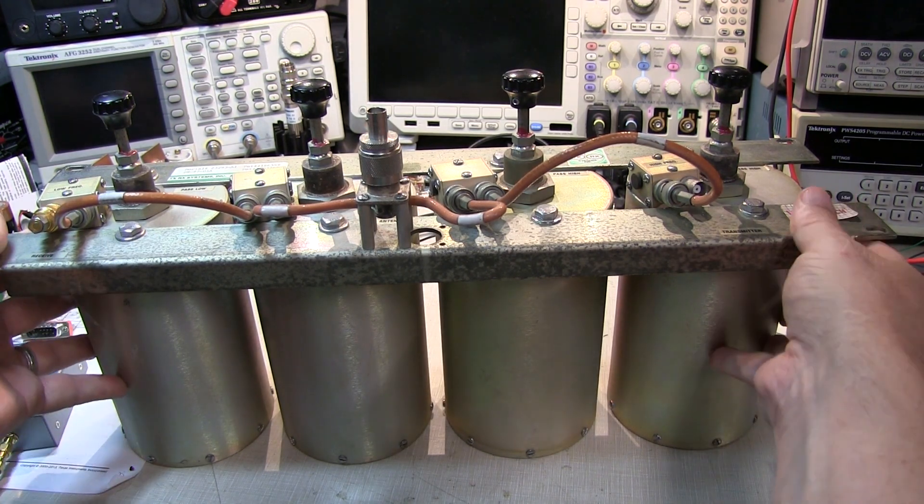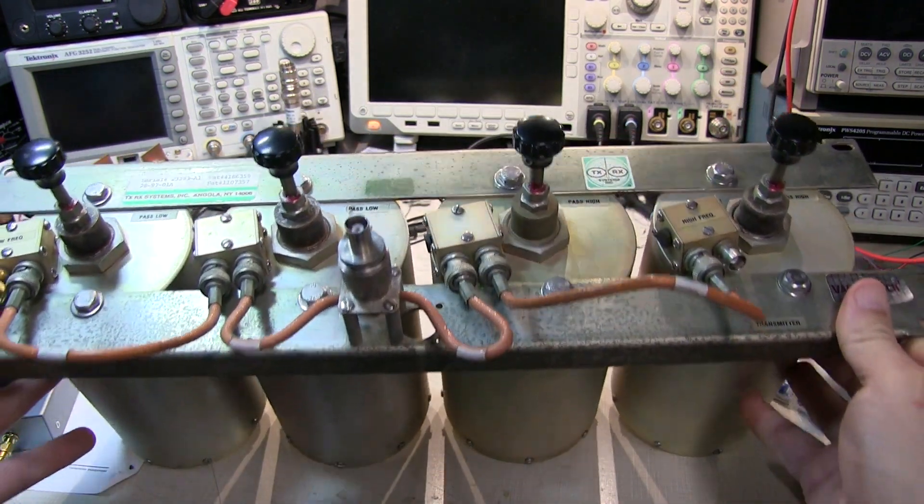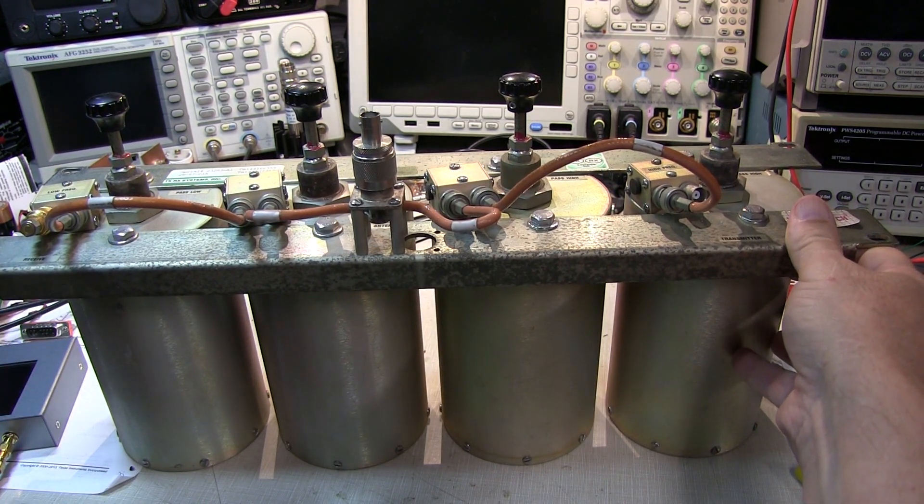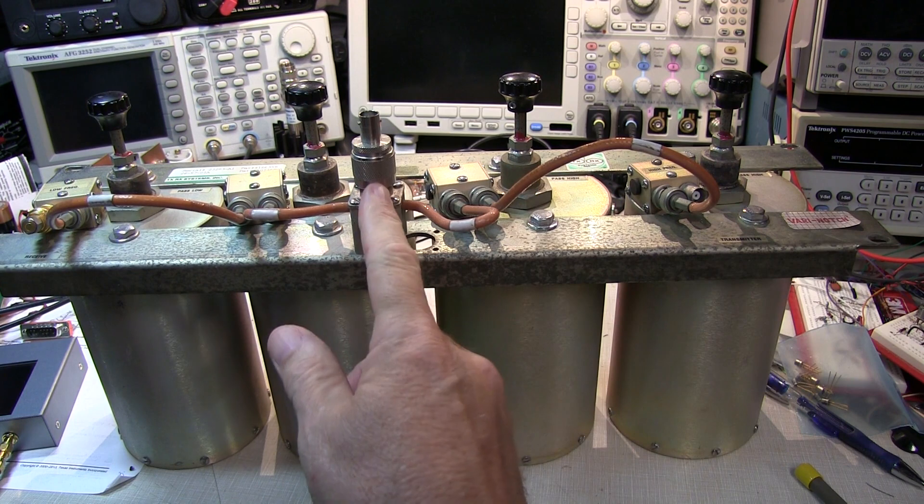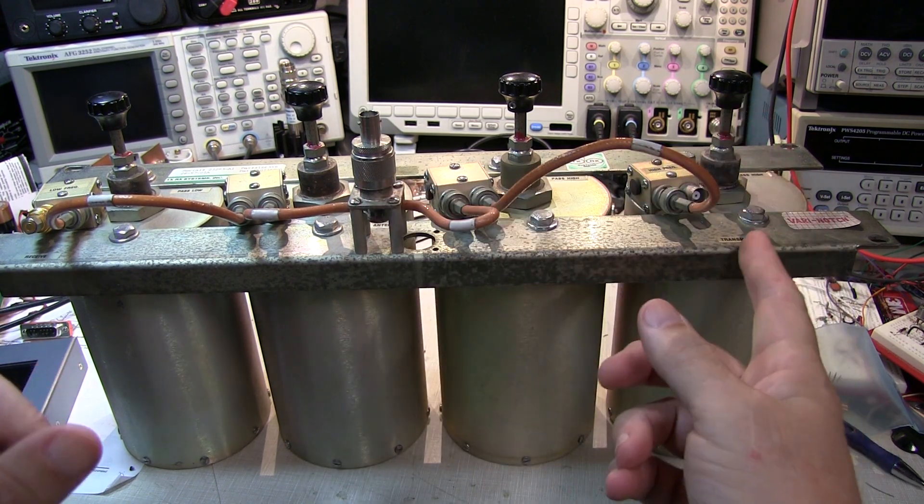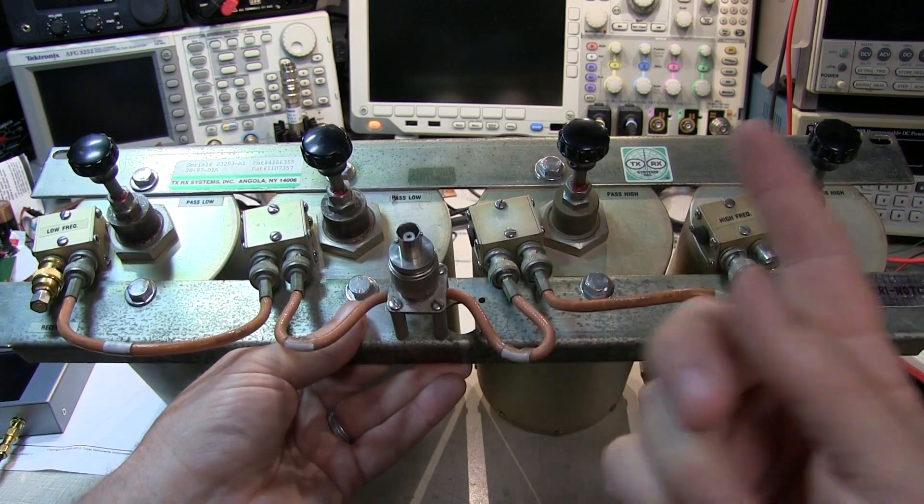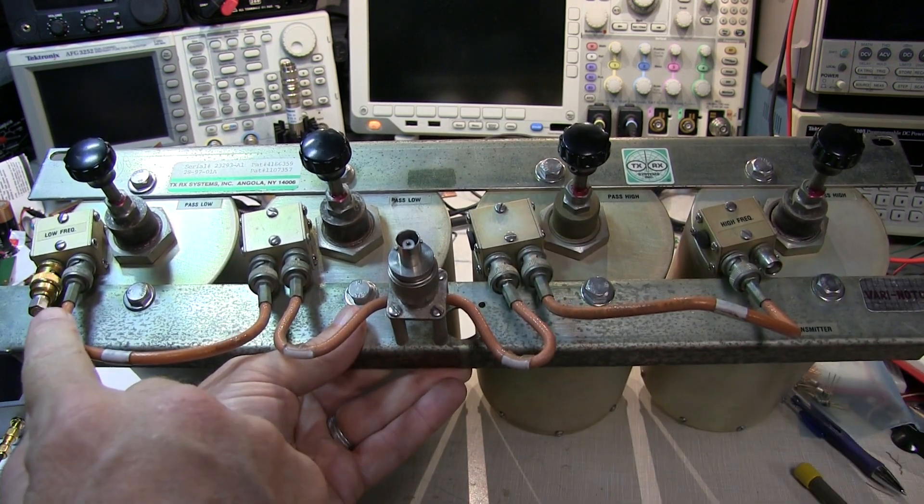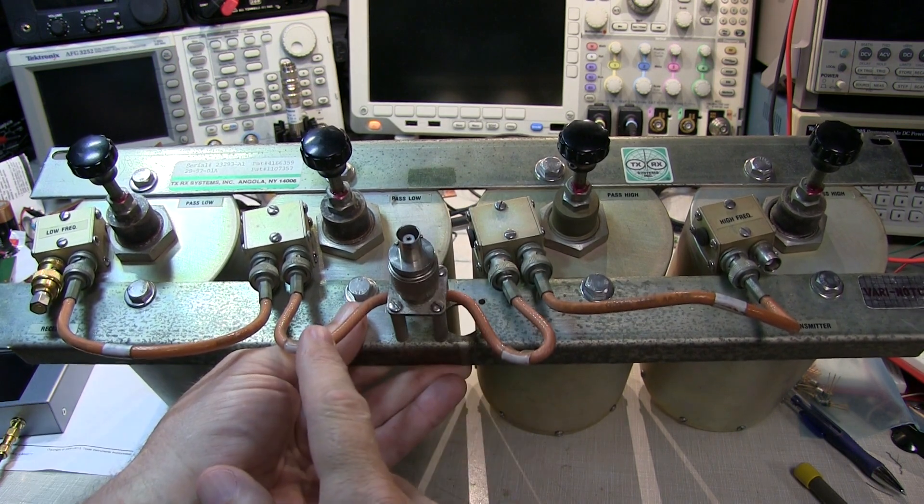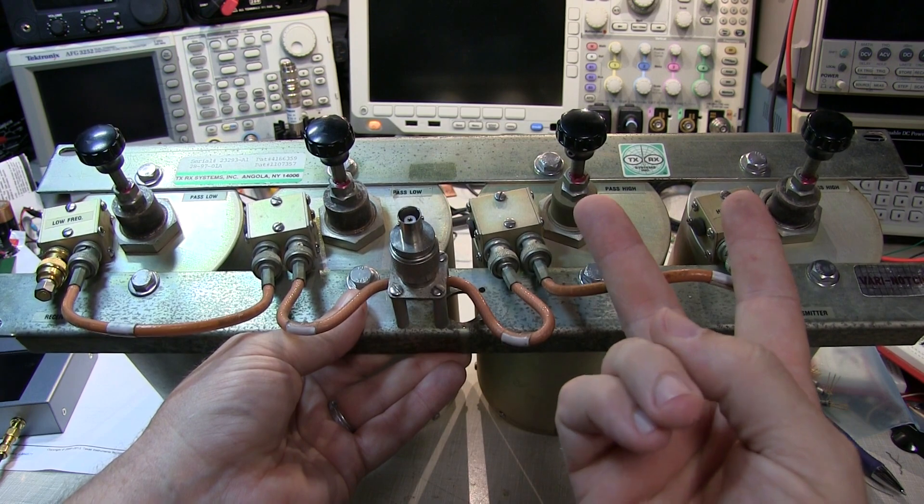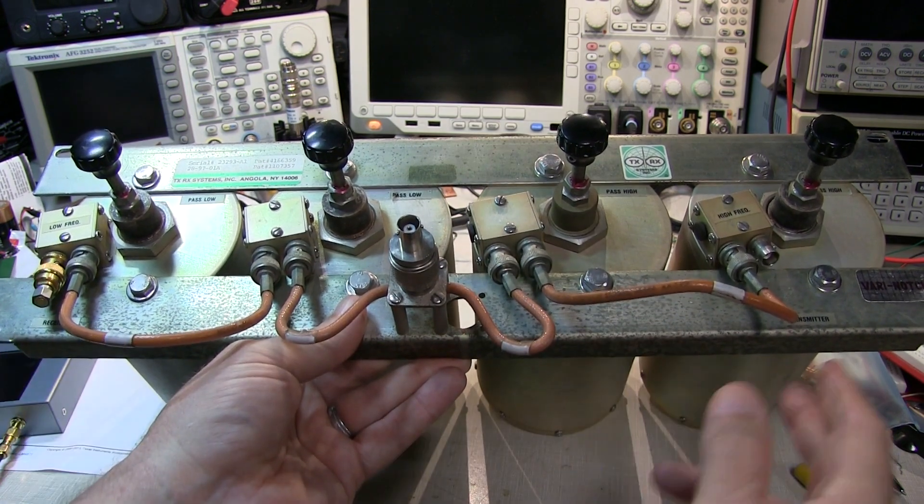For those outside of the radio world, a duplexer is a pair of filters that allow a repeater system to use the same antenna on different frequencies for transmitting and receiving. A repeater operates on a pair of frequencies - one to transmit on, one to receive on. In the 1.2 gigahertz range, transmit is done on the higher frequency and receiving on the lower end of the pair.